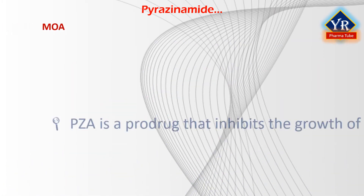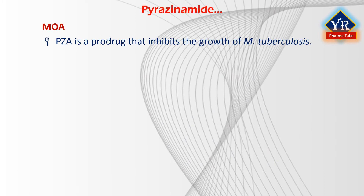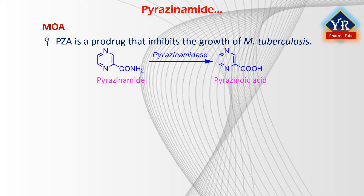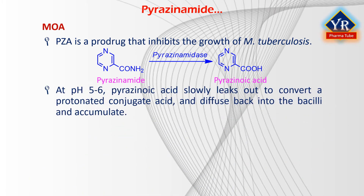Mechanism of Action: Pyrazinamide is a prodrug that inhibits the growth of mycobacterium tuberculosis. Pyrazinamide diffuses into the granuloma of mycobacterium tuberculosis, where the tuberculosis enzyme pyrazinamidase converts pyrazinamide to the active form, pyrazinoic acid. Under acidic conditions of pH 5 to 6, the pyrazinoic acid that slowly leaks out converts to the protonated conjugate acid, which is thought to diffuse easily back into the bacilli and accumulate. The net effect is that more pyrazinoic acid accumulates inside the bacillus at acid pH than at neutral pH.